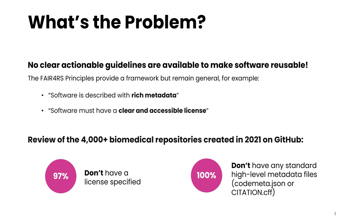The FAIR Principles for Research Software published in 2020 do provide a framework for optimizing the reusability of research software, but by design they provide only general instructions. For instance, software is described with rich metadata, software must have a clear and accessible license. As a researcher, it is still not clear how I should provide rich metadata or which license I need to choose.